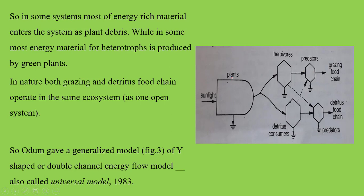At the same time, whatever dead material accumulates — fallen leaves and other plant material — that builds up as dead material. Detritus consumers then act on that dead plant material. So in the same system, at the same time, a herbivore is eating on one side, and detritus consumers are eating dead material on the other side.